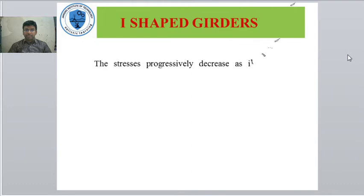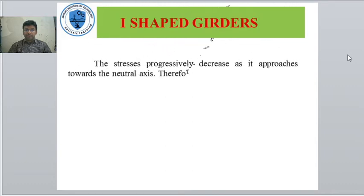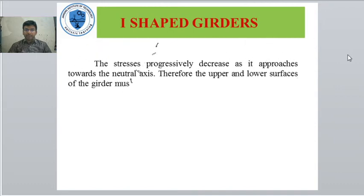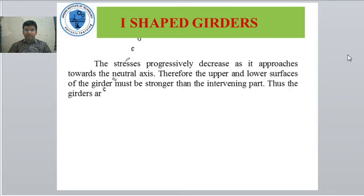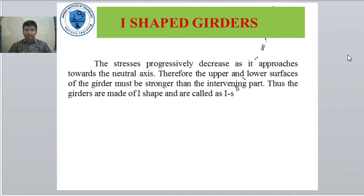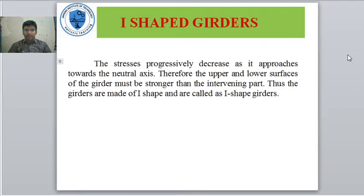The stresses progressively decrease as they approach the neutral axis. Therefore, the upper and lower surfaces of the girders must be stronger than the intervening part. Thus, the girders are made in an I-shape and are called I-shaped girders.